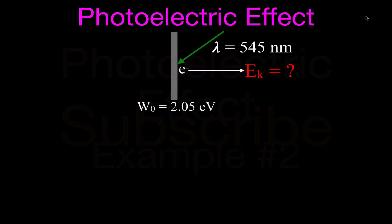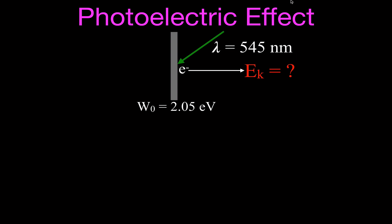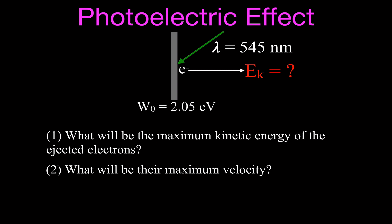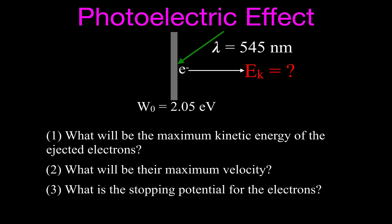This is our second example for the photoelectric effect. In this example, we have a metal plate with a work function of 2.05 electron volts — that's the energy needed to release an electron from that plate. The light we're going to shine on it has a wavelength of 545 nanometers. We want to know what the kinetic energy, maximum velocity, and stopping potential of the ejected electrons will be.